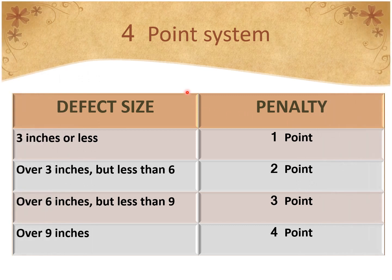How do we calculate these defects or grade the fabric? There is a four-point system. One factor is defect size and the other is the penalty in terms of points assigned to the fabric. If the fabric defect is three inches or less, we assign one point. Over three inches but less than six inches, we assign two points. Over six inches but less than nine inches, we assign three points. Defects longer than nine inches are assigned four points. At the end we calculate the total points.